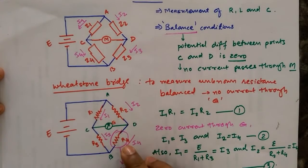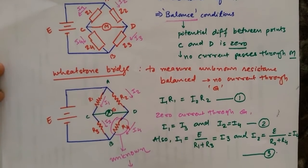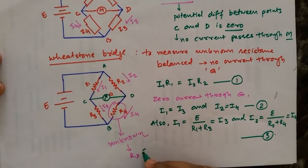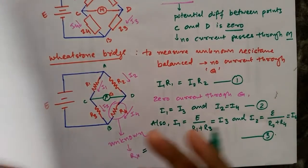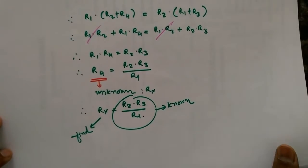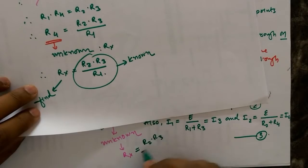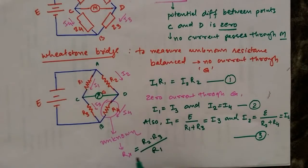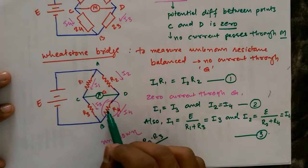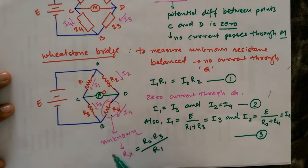This is the Wheatstone bridge where R4 or any one resistance, let's say R4, is unknown. If we denote it by Rx, then it can be found using the derived equation that is R2 times R3 by R1. So this is one application: to find out the value of unknown resistance.